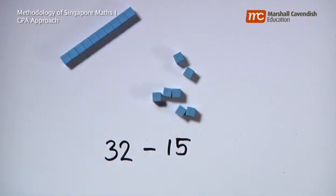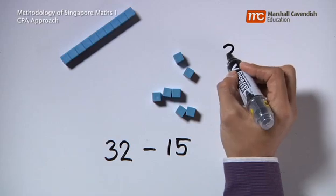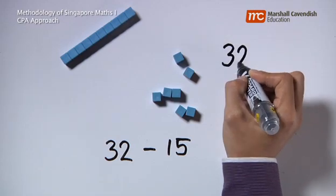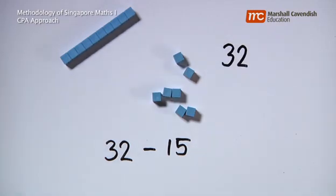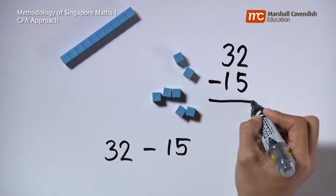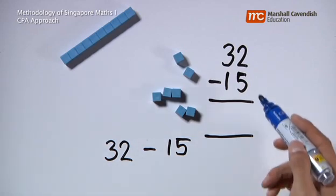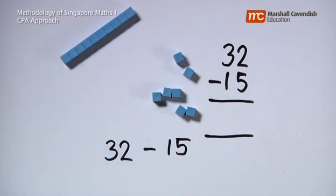Resulting in 17. Much later, children will write it in this format: 32 subtract 15, and they will use their prior experience with the concrete material to say that, okay, to take away 5 from the 2 ones, there's not enough of the ones. But that's alright.